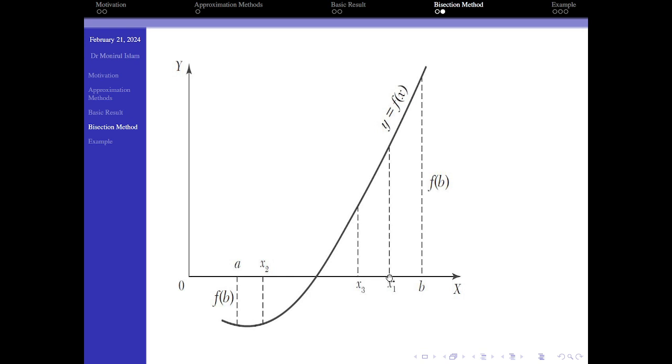So clearly, since f(x₁) is positive and f(a) is negative, therefore the root lies between a and x₁. Similarly, after second bisection, we get x₂. f(x₂) is negative, that's why the root lies between x₁ and x₂. And similarly, after the third and fourth and so on nth bisection, we get the root.